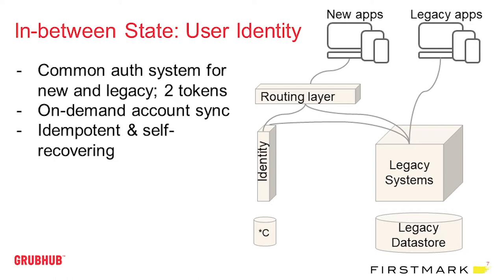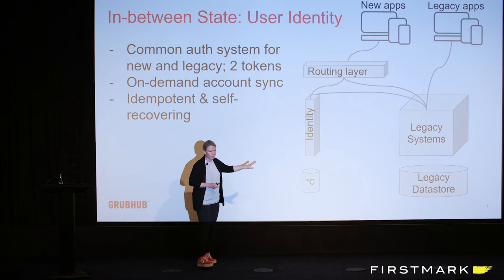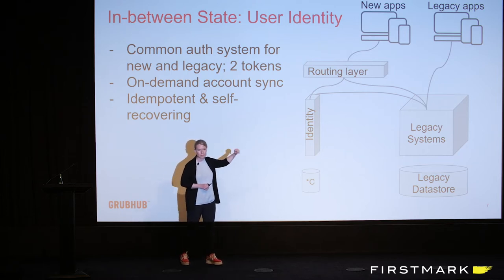The second interesting part is user identity. Picture yourself with a Seamless stack with Seamless apps, a Grubhub stack with Grubhub apps, and now a new stack. We had to revisit our authentication and authorization scheme because once you run multi-data center hot-hot, everything changes. We ended up with a new stack on one set of identity constraints and a legacy stack on another — two identity systems.